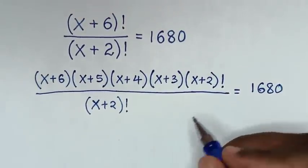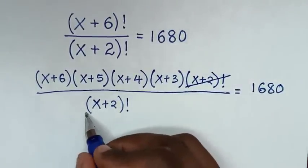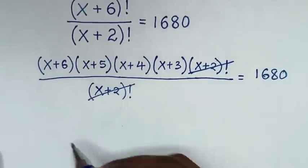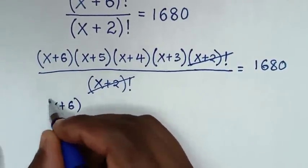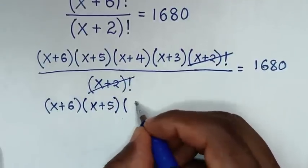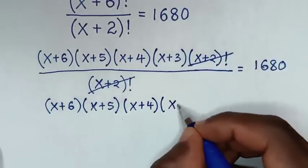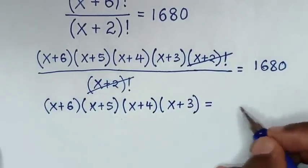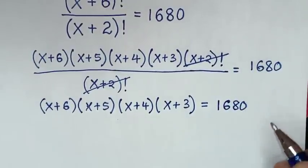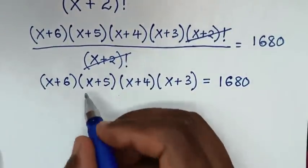In the next step, (x+2)! in the numerator cancels with (x+2)! in the denominator, leaving us with (x+6)(x+5)(x+4)(x+3) = 1680.